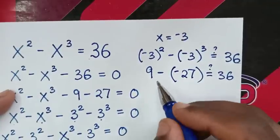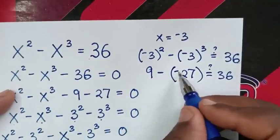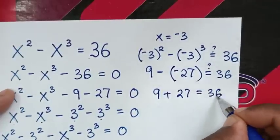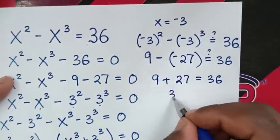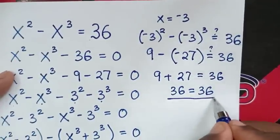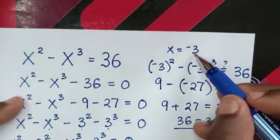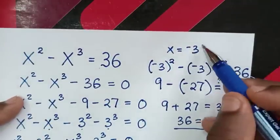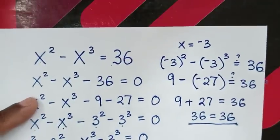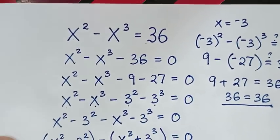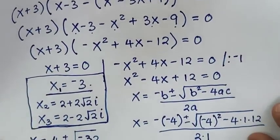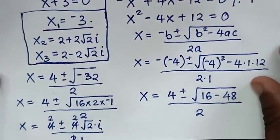Opening the bracket: negative times negative gives positive, so it is 9 plus 27 equals 36. Left side equals right side, so it is true that x equals negative 3 is the real solution, and the complex solutions are also correct. Thank you, don't forget to subscribe to my channel and see you in the next video, bye bye!